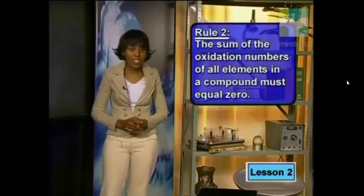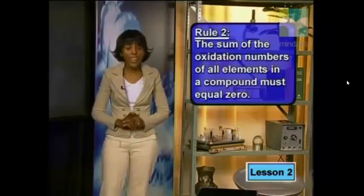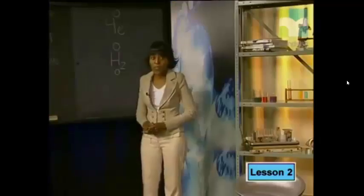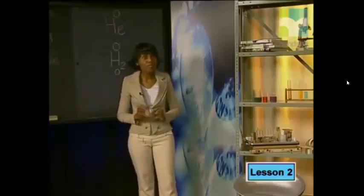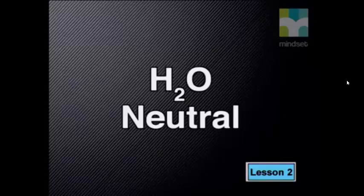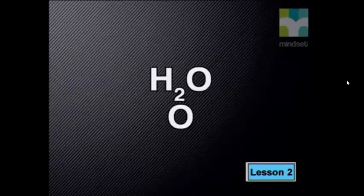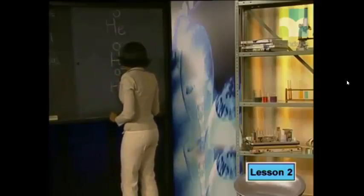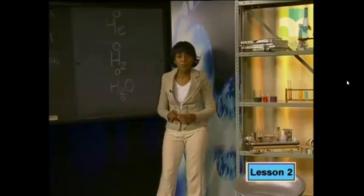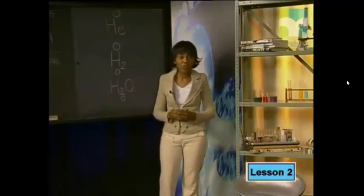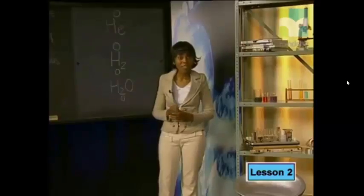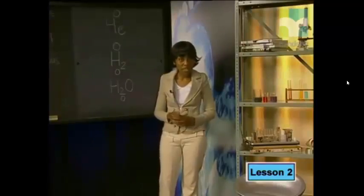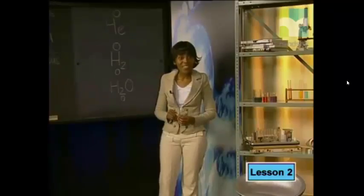The second rule for assigning oxidation numbers reads: the sum of the oxidation numbers of all the elements in a compound must equal zero. When we used rule one, we assigned an oxidation number of zero because the elements were neutral. Since all compounds are neutral overall, the oxidation numbers for compounds must also add up to zero. We can write this total oxidation number below the formula of the compound. Some elements in a compound must be electron-rich and some must be electron-poor. To comply with rule two, we must assign oxidation numbers to all the elements within a compound. If we do this correctly, the sum at the end will be zero.